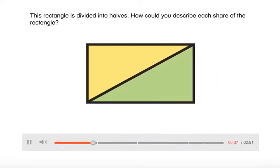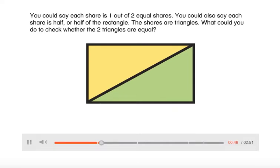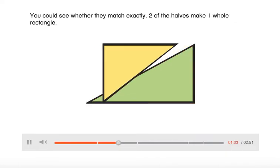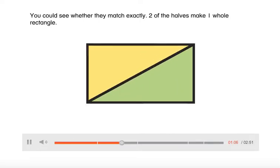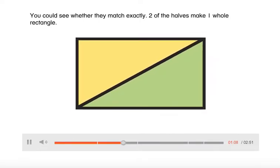This rectangle is divided into halves. How could you describe each share of the rectangle? You could say each share is one out of two equal shares. You could also say each share is half, or half of the rectangle. The shares are triangles. What could you do to check whether the two triangles are equal? You could see whether they match exactly. Two of the halves make one whole rectangle.